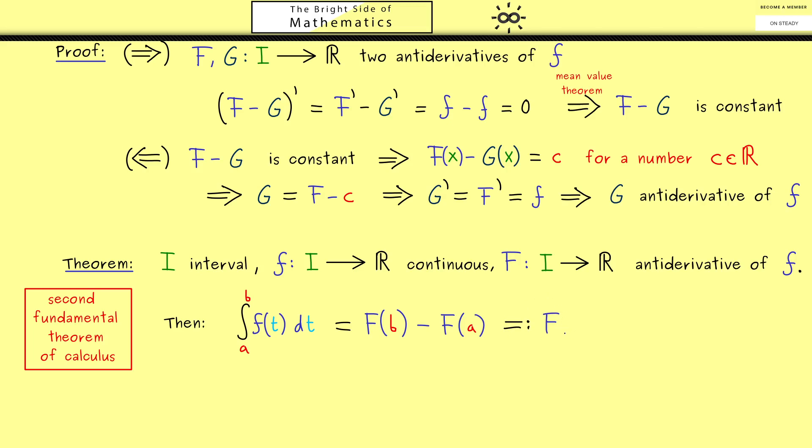Now for explicit calculations, it's helpful to have a short notation for this difference on the right-hand side. One simply writes F or F(x) and then comes a vertical line with a and b on it. So you would read this as F of the upper number minus F of the lower number. Now in summary, you should see this is such a nice result because it tells us that we don't need the approximation with step functions anymore to calculate an integral.